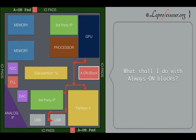Now let's talk about some tips. Memory placement, third-party IP placement, macro placement — these are more or less standard techniques. Let's focus on the always-on block. Today's SoCs have certain — actually many — always-on blocks. For talking purposes here, let's say one block is the always-on block in this floor plan.